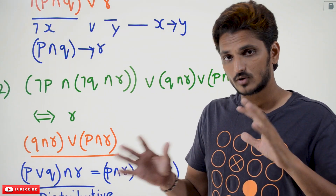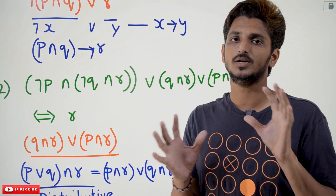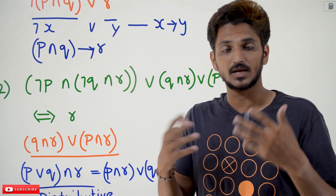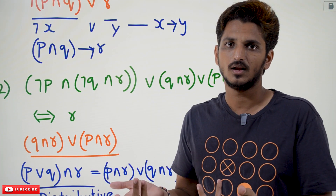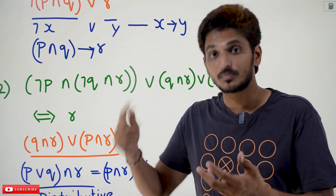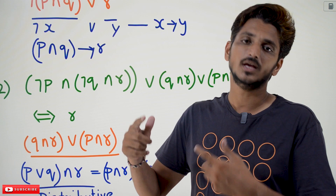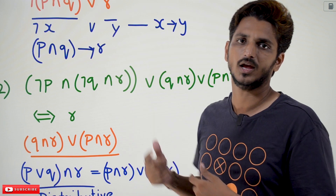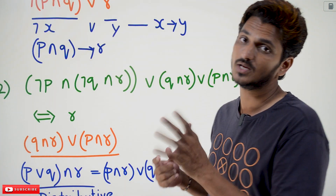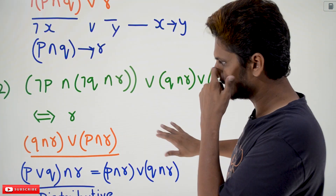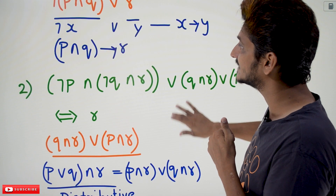This is how we need to identify and use different equivalence formulas which we discussed in our previous classes. We have to check different possibilities — sometimes a chosen possibility may not work, but with practice you will get it more quickly. Practice is very important for discrete mathematics. Let's take the second example.